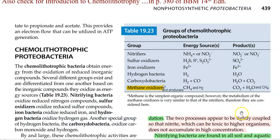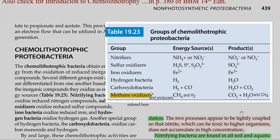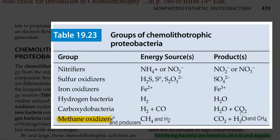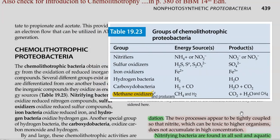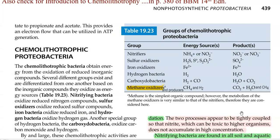The important groups of chemolithotrophic bacteria we are going to study include the nitrifiers, sulfur oxidizers, iron oxidizers, hydrogen bacteria, carboxydobacteria, as well as the methane oxidizers and producers. In the second column, you can see which molecule is serving as an energy source, and the third column shows the products that have been produced when that particular energy source has been used.